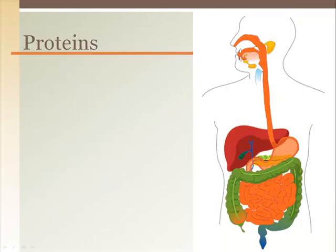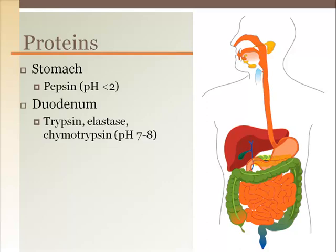Proteins are broken down in the stomach by pepsin at a very low pH. When the chyme enters the duodenum and the pH is neutralized by bicarbonate from the Brunner's glands, the pancreas secretes several types of protein-digesting enzymes.